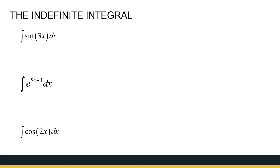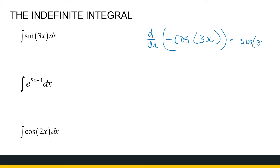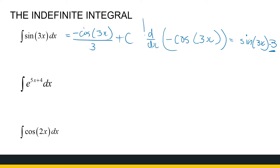So, integral of sin(3x). We know there'll have to be a cosine to get to a sine, and it'll have to be minus cos. If I take the derivative of minus cos(3x), I get minus times a minus, which is a plus, times sine(3x), and then the chain rule tells me to multiply by 3. But that 3 isn't in the original, so I divide by 3. The answer is minus (1/3)·cos(3x), and differentiating that confirms it.